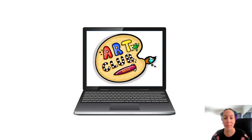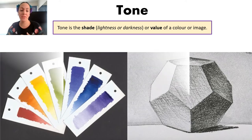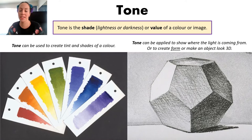Hi guys, welcome to Remote Art Club. Let's make some bubbles. Something to keep in mind is tone. Tone is essentially light or dark, and it can be in an object or it can be a color. For example, the image on the left shows examples of tone used to show how light or dark a color is, and on the right we've got an example of tone of a shape. You can see where the light is coming from - a very light tone on the left and a dark tone on the bottom right.